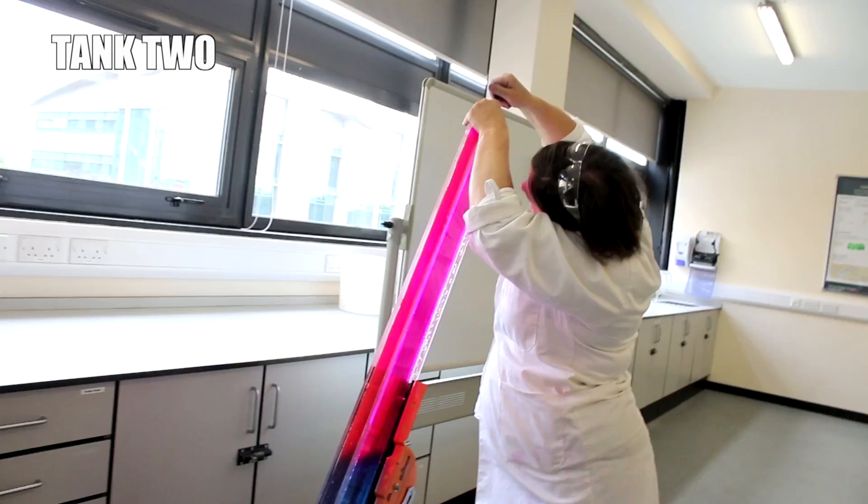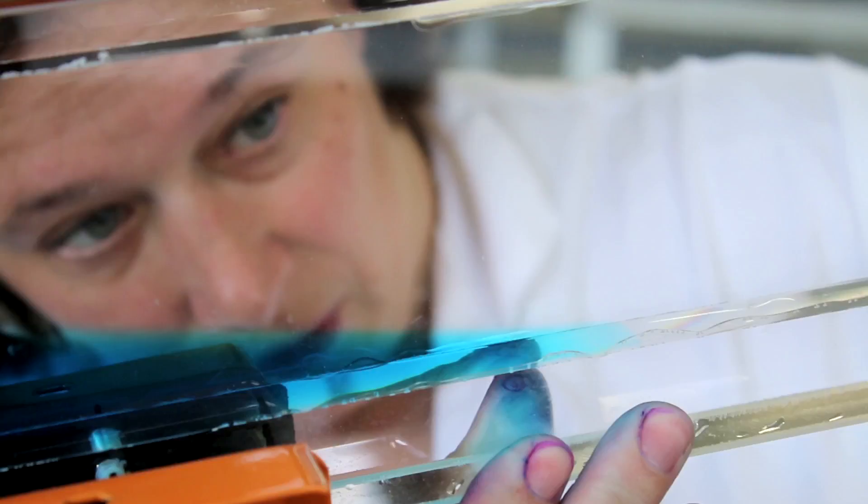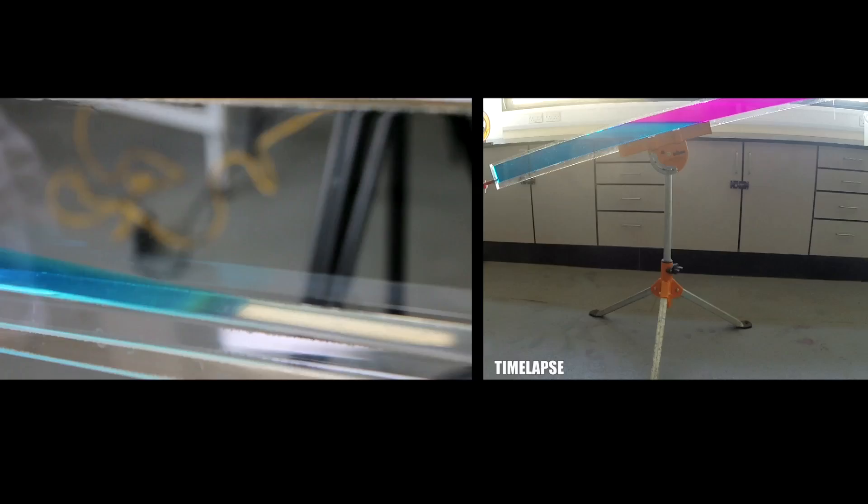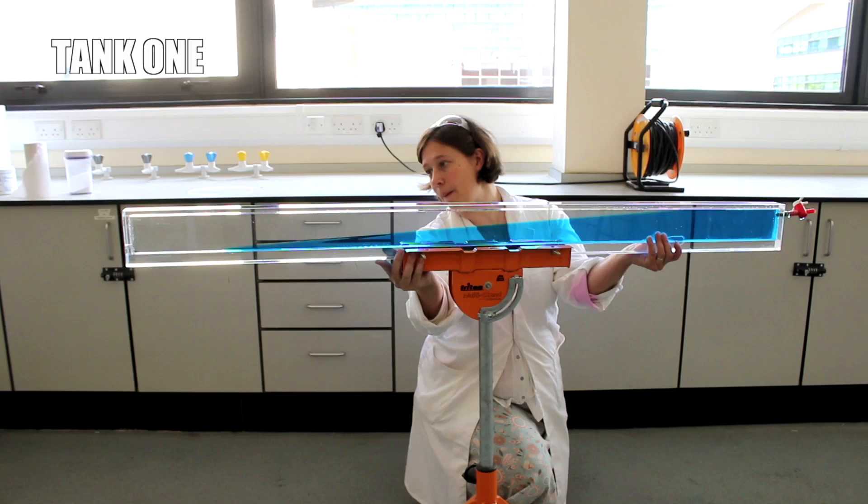Next, and this is done very carefully, in incremental steps, the tanks are tipped to the horizontal. It's crucial the layers don't mix, and in both cases, we now have the densest salt water below the fresh water.